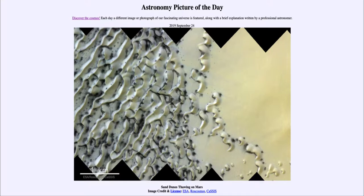The winds also do create sand dunes, and you can see those here. The darker colors are the sand underneath, and then on top of it — being near the pole — we do get ices. Ice will change and come and go with the seasons, just as it does here on Earth.